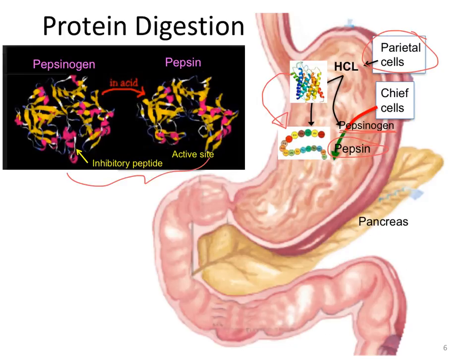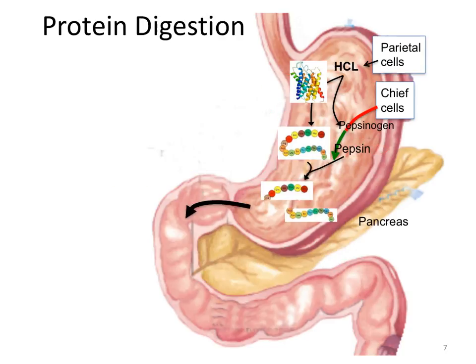Pepsinogen is made with an inhibitory peptide, and when the pepsinogen is in an acidic environment, that inhibitory peptide is released and now we have the active form of pepsin. Activated pepsin cleaves the dietary polypeptides into shorter polypeptides, beginning the process of protein digestion.